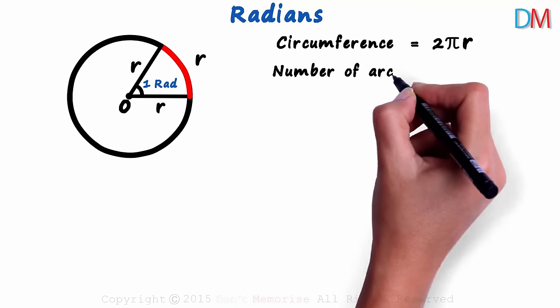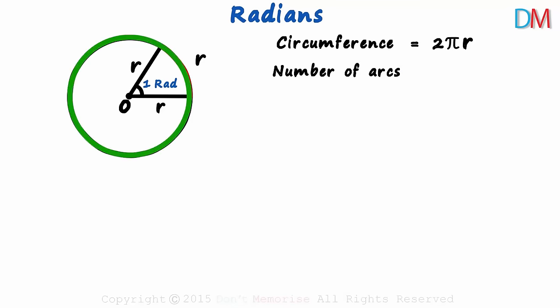Now listen to the next question well. How many such arcs would you need to cover the entire boundary of the circle? Let me repeat the question. How many such arcs of length r would you need to cover the circumference of the circle? Pause the video and see if you can work through this on your own.